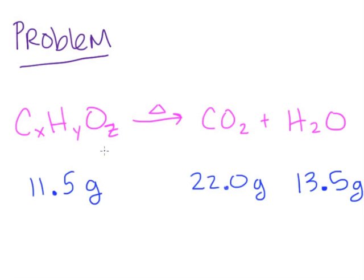There's just one molecule over here that contains all three elements — carbon, hydrogen, and oxygen. But over here, the carbons are isolated in CO2, and the hydrogens are isolated in H2O. So knowing the grams of CO2 and the grams of H2O, we can correlate that and solve for the empirical formula of ethanol. So this is how we're going to do that. We're going to start off with 22 grams of CO2.